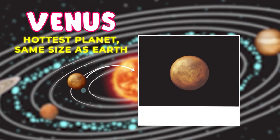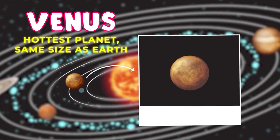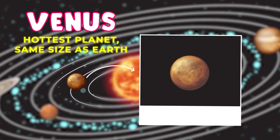Venus. Venus is about the same size as Earth, but much hotter. It has thick clouds that trap heat, making it the hottest planet in our solar system.